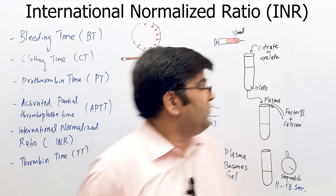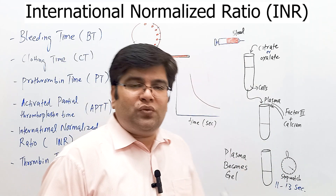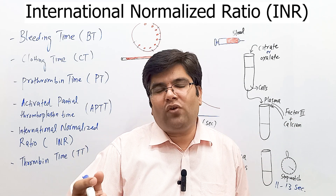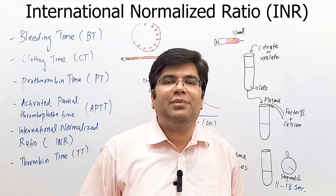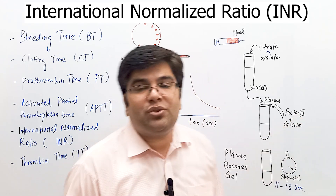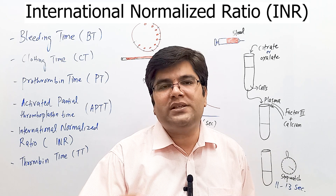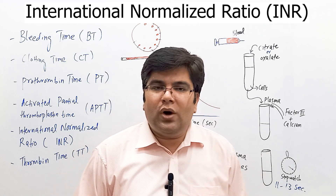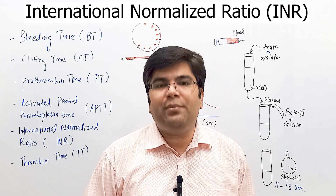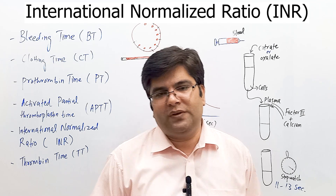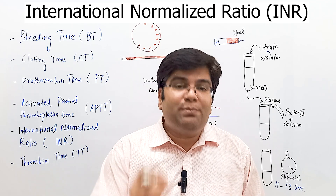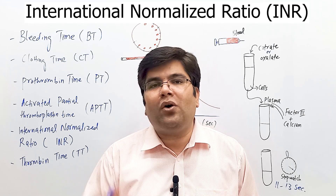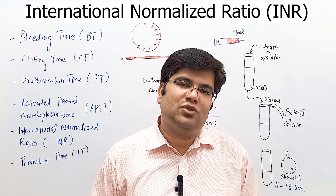There is one issue with determining prothrombin time. The tissue factor used to activate the extrinsic pathway is extracted from human placenta or rabbit brain, and its activity varies between different batches. This is why PT results vary based on the activity of the tissue factor and differences in analytical systems used.